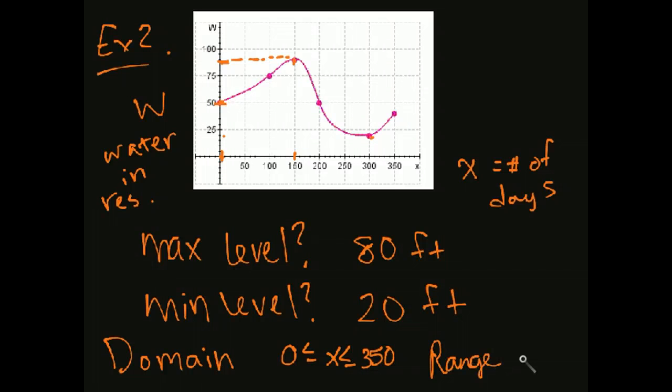And how about the range? The range goes from 20 to 80 according to what we looked at for the minimum and maximum level. So you see where we got that off the graph - we were looking from the smallest to largest X for the domain and the smallest to largest Y for the range.